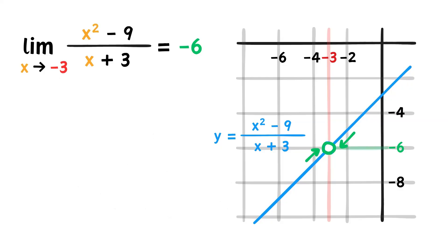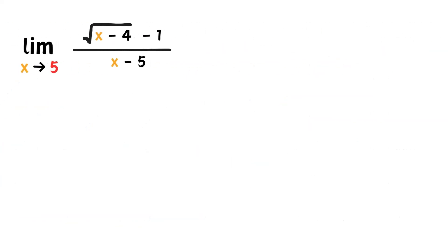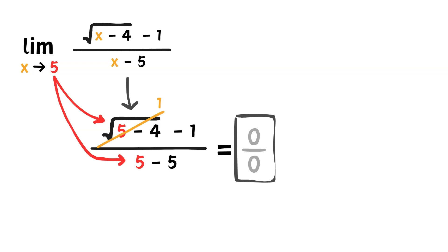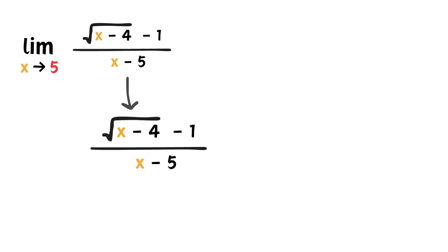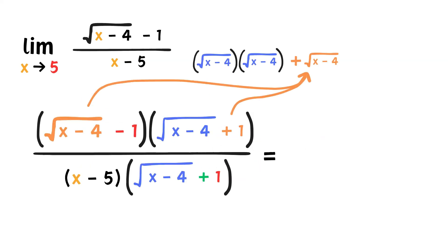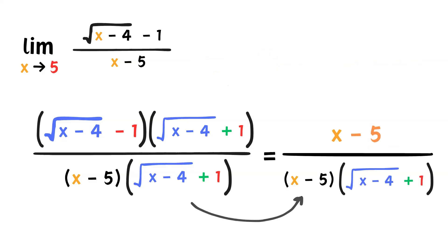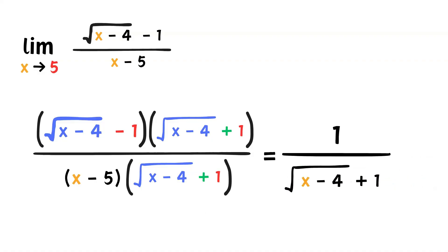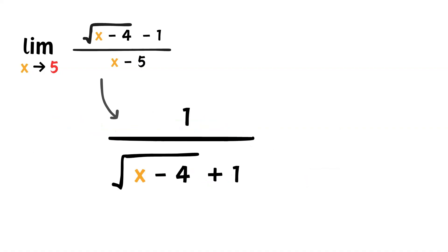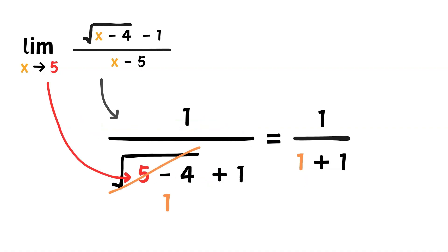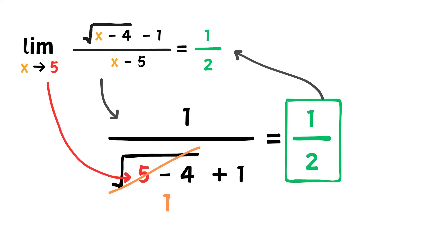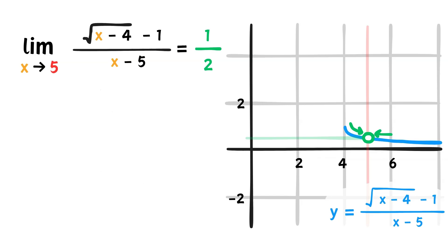Again, we can look at the graph to confirm our answer. Here's another example that has a radical. If we directly substitute, we get 0 over 0. So let's try to manipulate this problem. Since we have a radical, let's get rid of it by multiplying by the conjugate. Simplifying the numerator, we get x minus 4 minus 1, which is x minus 5. So the (x minus 5)s can cancel out. After doing this, we get 1 over the square root of (x minus 4) plus 1. Now we can directly substitute again. This time, we get 1 over 1 plus 1, which is 1 over 2. That's a real number, so that's the limit. We can check the graph, and we see that we are correct.